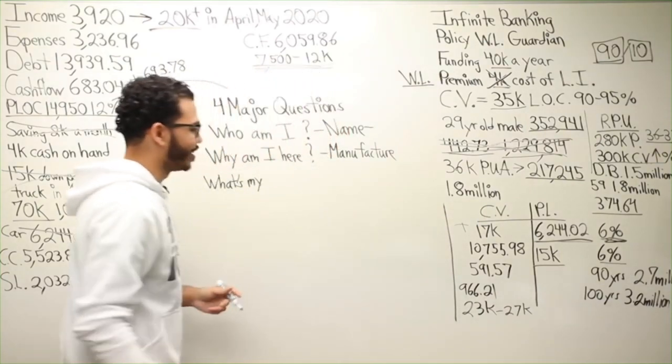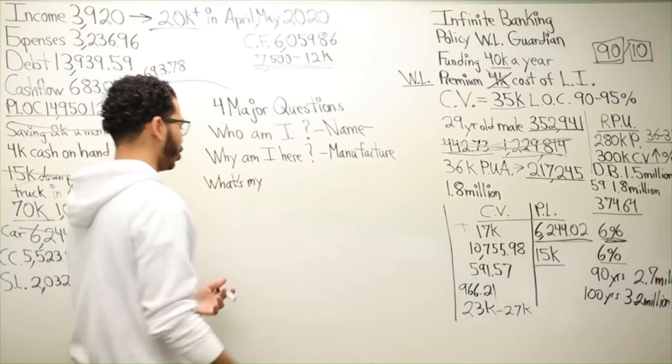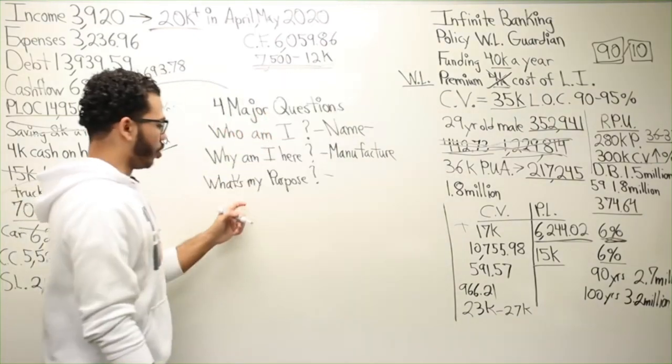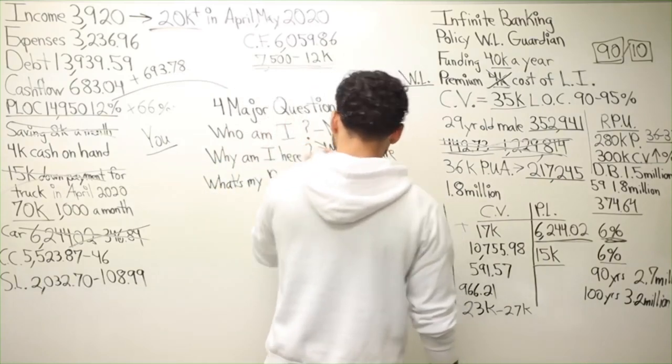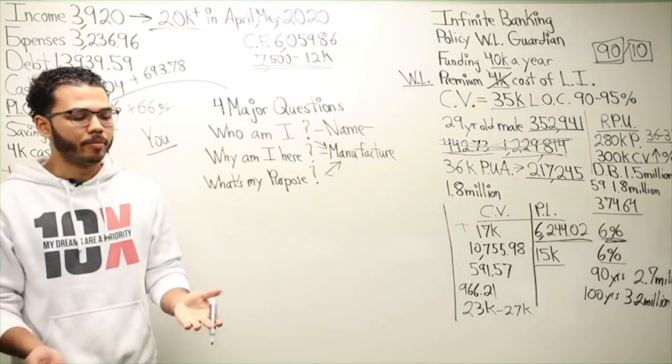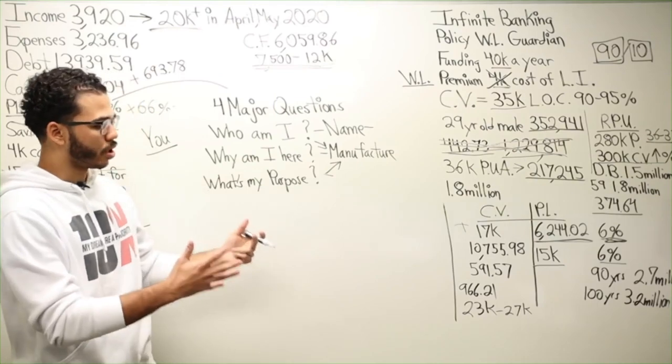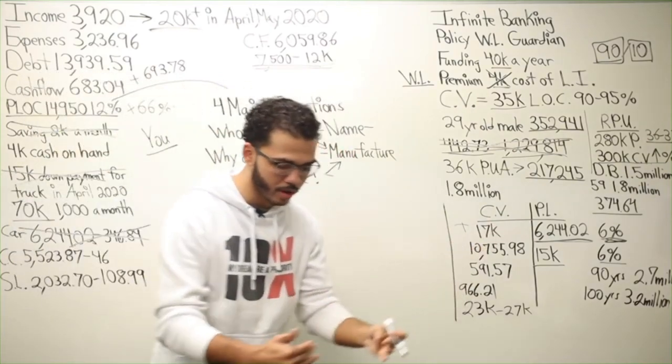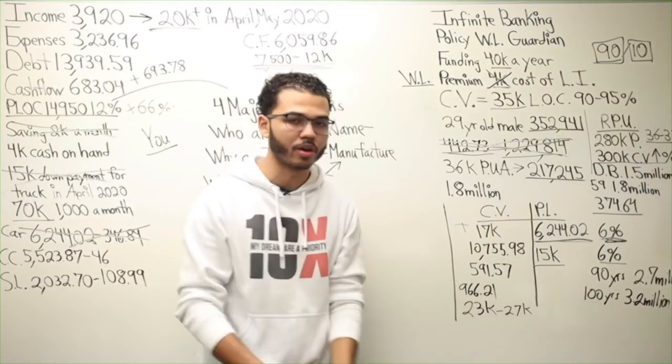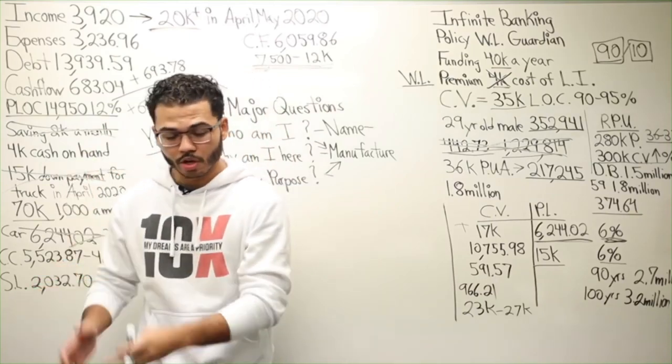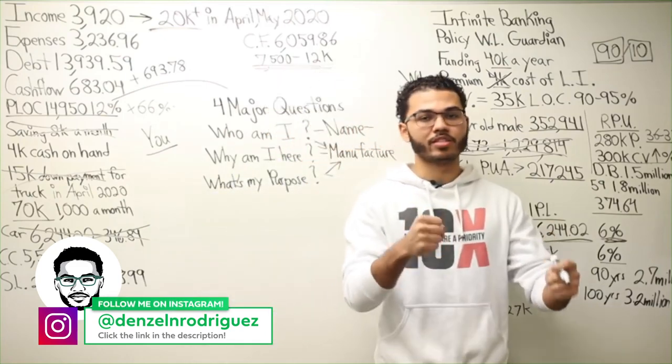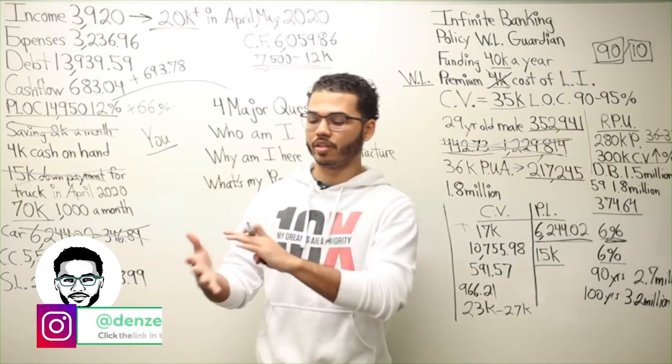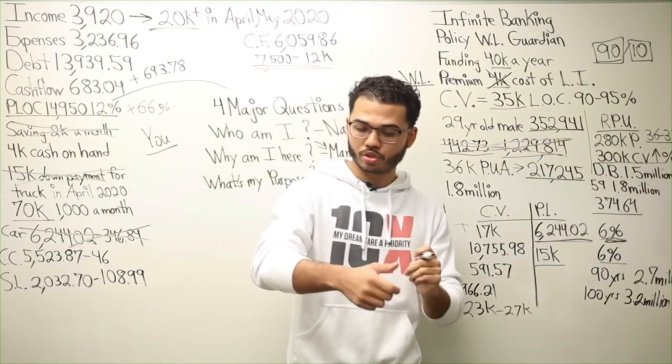Then we start getting into the meat and potatoes: what's my purpose? Again, you got to go to the manufacturer for that. When Ford made the car, the car knows that it has to do X, Y, and Z, and it's made with these parts. The manufacturer creates a manual, puts it in the car, so when the user gets in they can read the manual and see, 'Oh, that's how you turn the car on.'